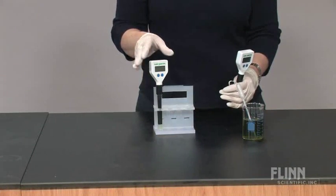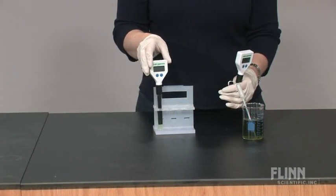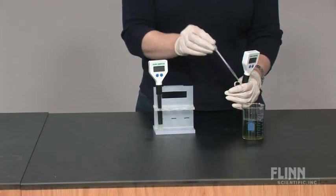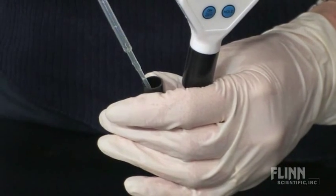For long-term storage, the pH electrode should be stored upright and in a storage solution. The storage solution can be placed in a test tube as we saw earlier or in the electrode cap.